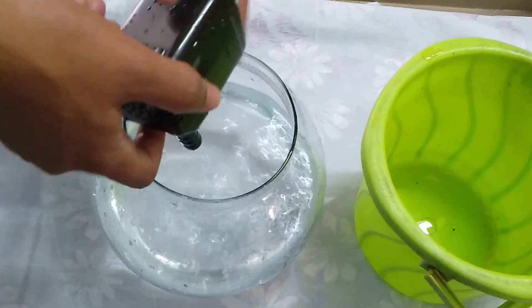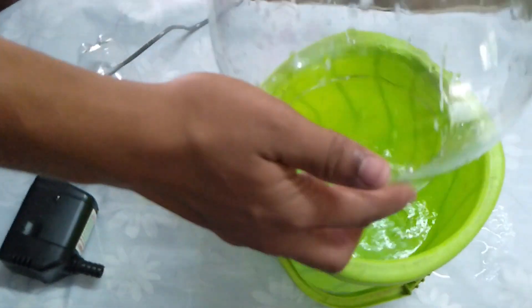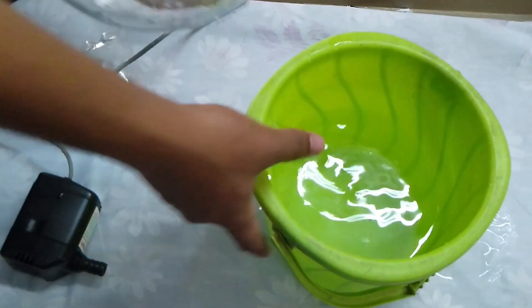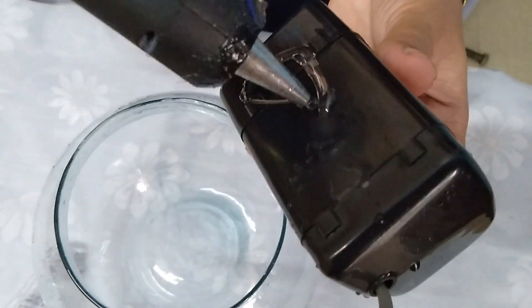Now apply some glue with the help of a glue gun on the DC motor and stick it into the glass ball.